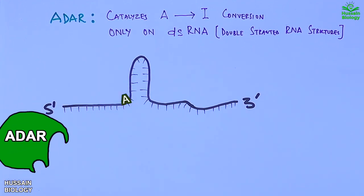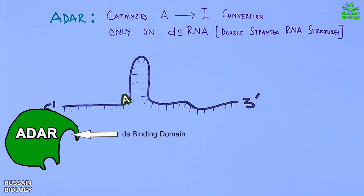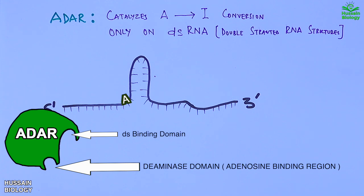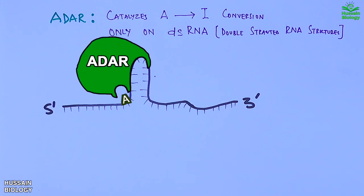The ADAR has got DS binding domain, that's double strand binding domain, and it also has got adenosine binding domain as shown in the diagram. The ADAR enzyme comes in and binds the double stranded RNA and then mediates the conversion.